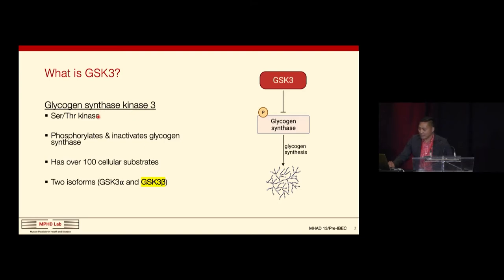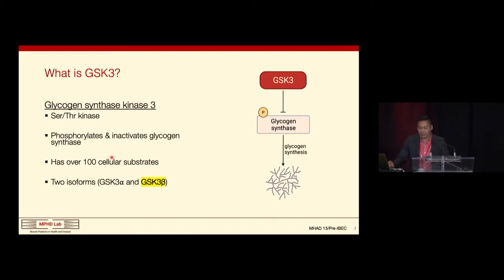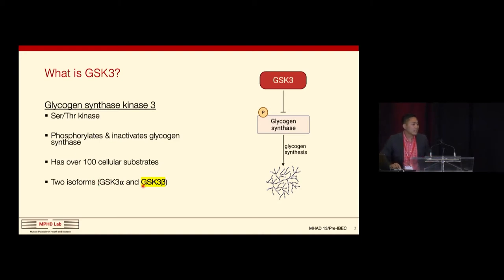GSK-3 is a serine-threonine kinase that was first identified for phosphorylating and thus inactivating glycogen synthase and glycogen synthesis. We now know it has over 100 cellular substrates and two isoforms — GSK-3-alpha and GSK-3-beta. I've highlighted the GSK-3-beta isoform because it's the most dominant isoform found in skeletal muscle.